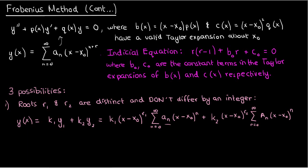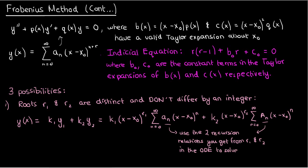The small aₙ and capital Aₙ come from different variants of the recursion relation. When you solve the ODE by Frobenius's method, you get a recursion relation that contains r. Plugging in r₁ gives one variant and plugging in r₂ gives another. To get small aₙ, you solve the r₁ variant; to get capital Aₙ, you solve the r₂ variant. That's how you get the two coefficient sequences when r₁ and r₂ don't differ by an integer.